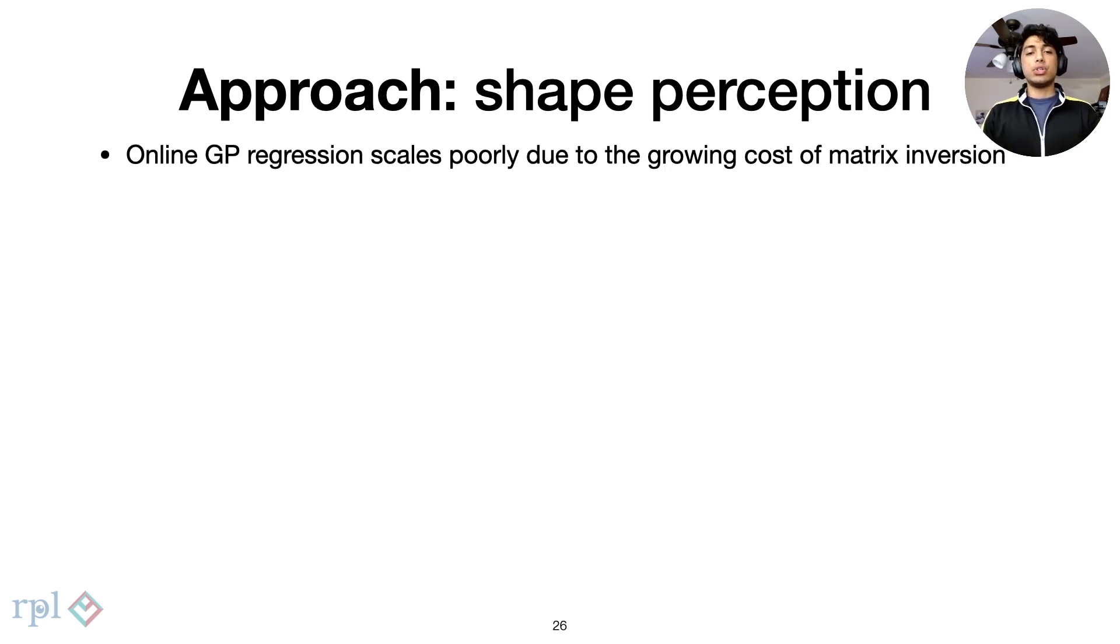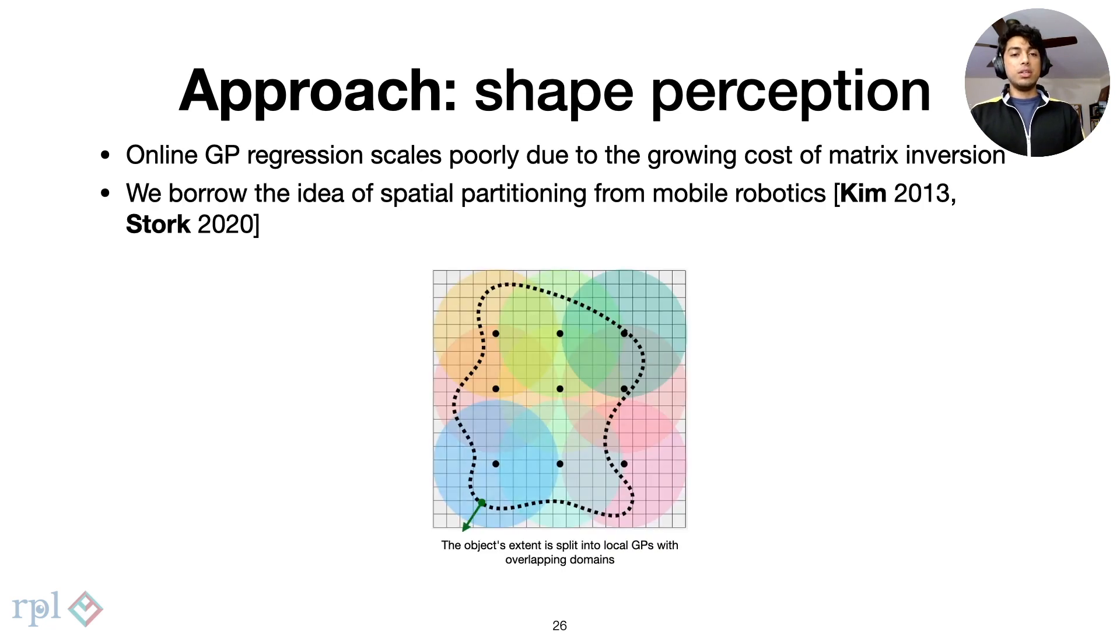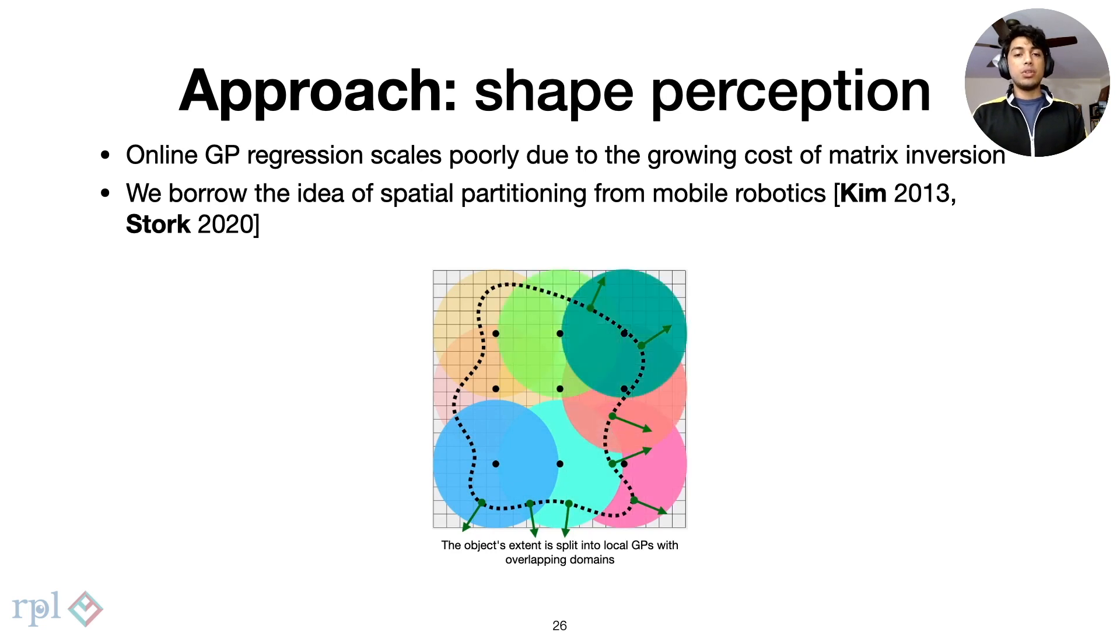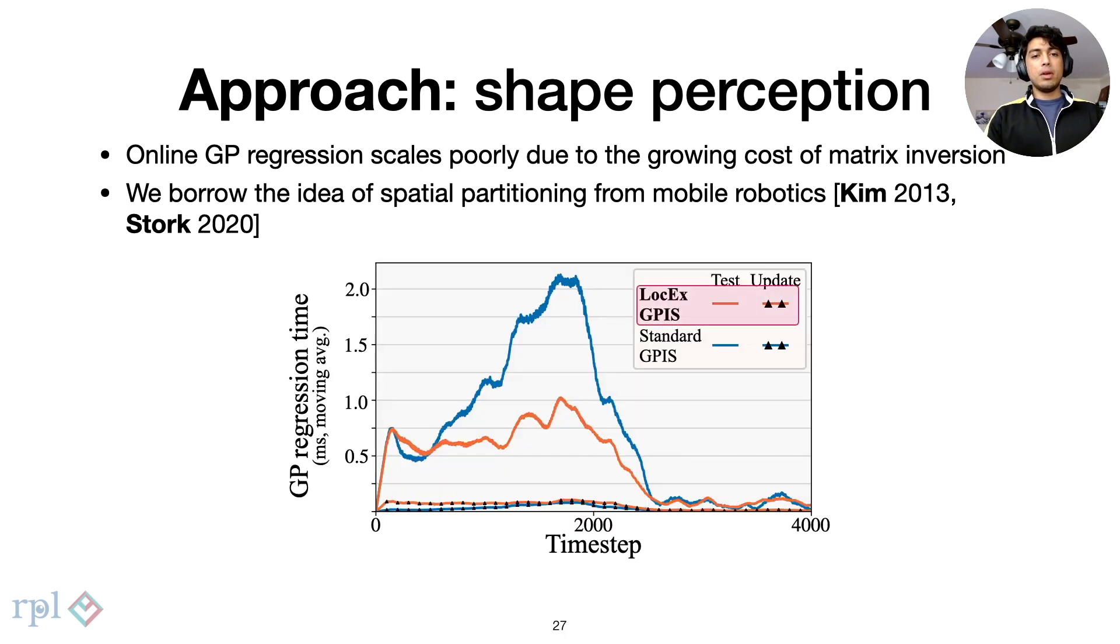GPs, however, are notoriously slow due to the matrix inversion costs, and this scales with the number of measurements you add of an object. To alleviate this, we spatially cluster our measurements to instead solve smaller, local systems with overlapping domains. This gives our implementation lower query time than the standard single GP.